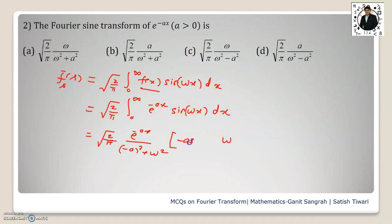Sine is coming here first, so we write sin(ωx) minus ω·cos(ωx), and we will evaluate this under the limit 0 to infinity. So we are having here 1 upon a² plus ω². Now I put the infinity. We know that e to the power minus infinity will be 0, so first limit is 0.